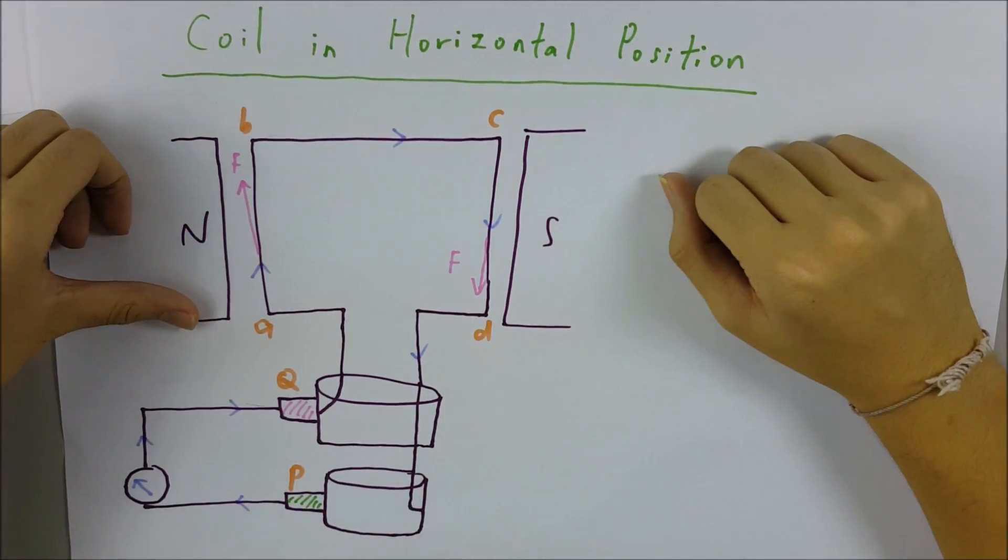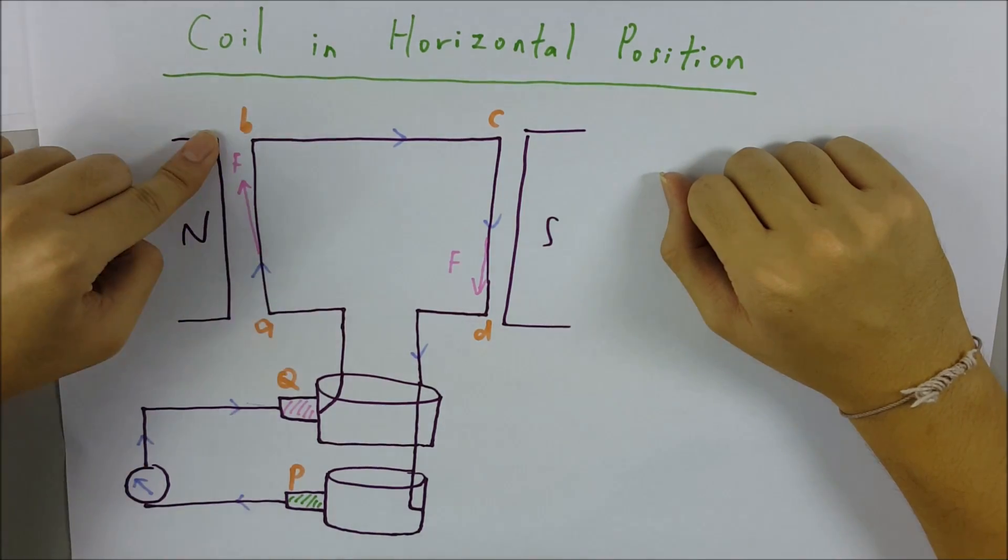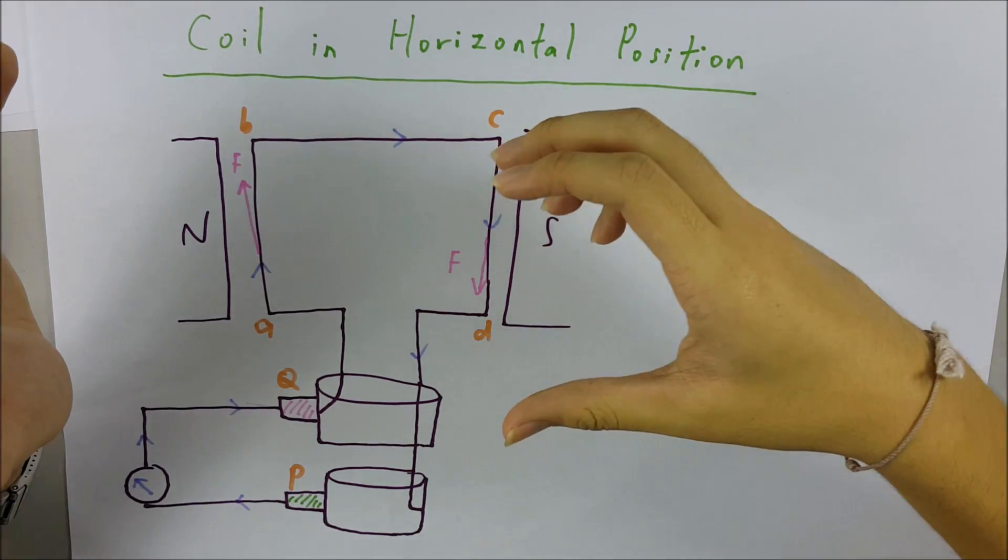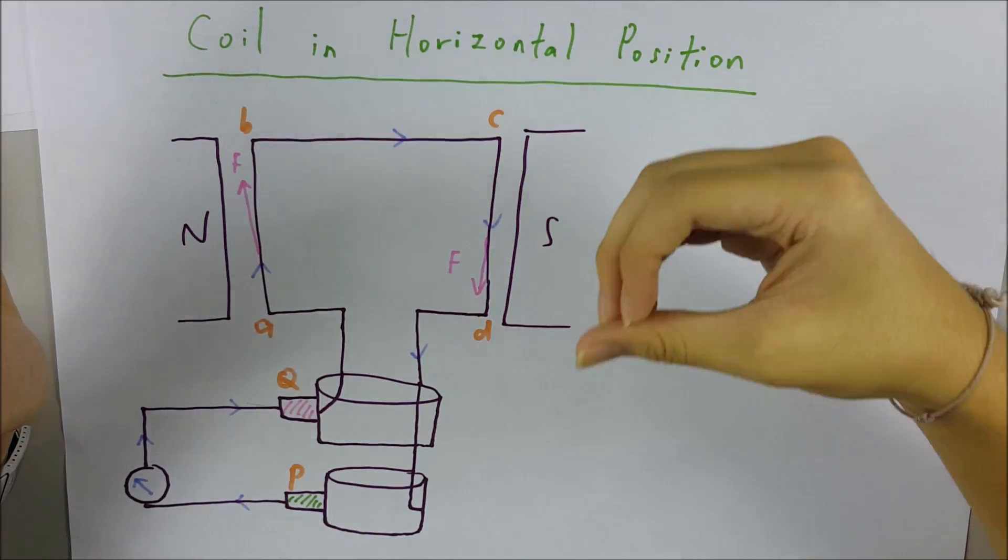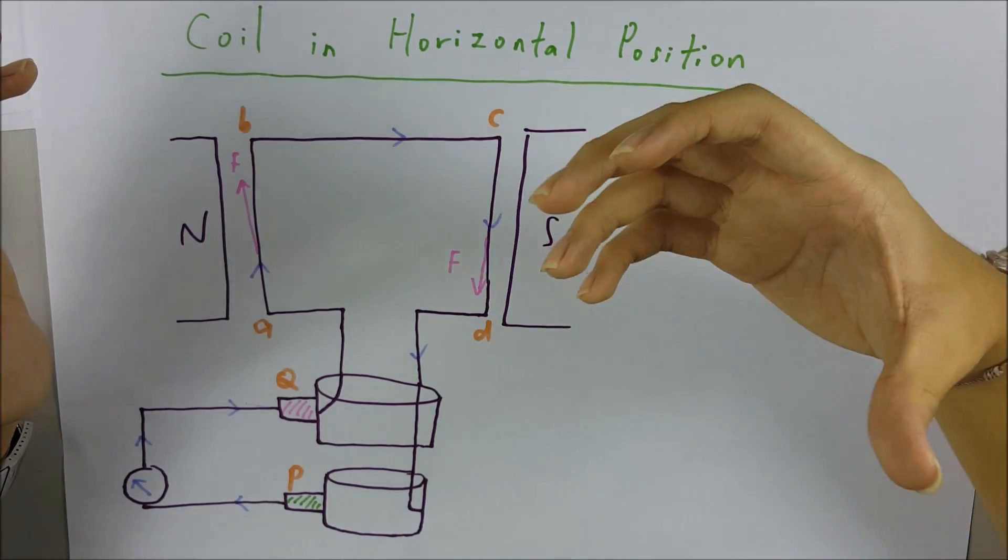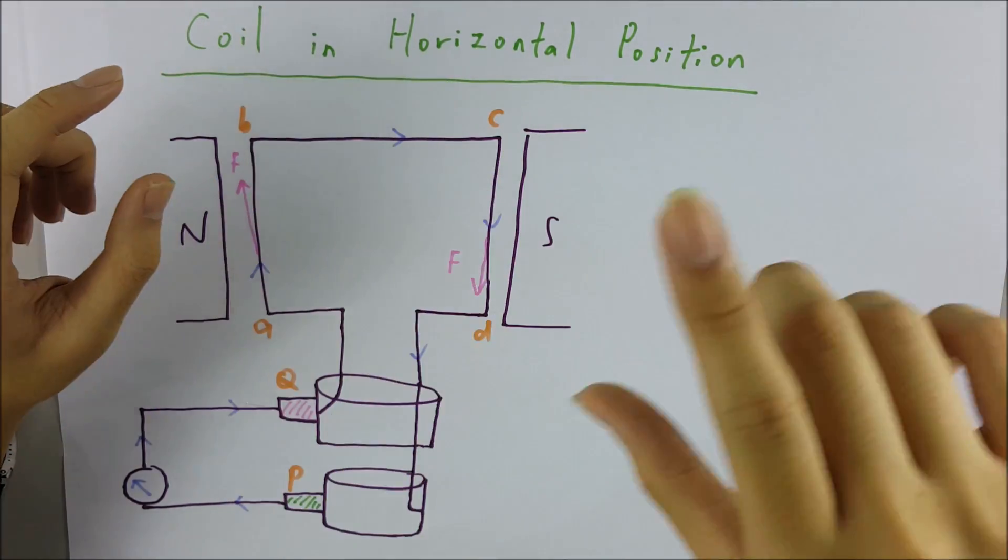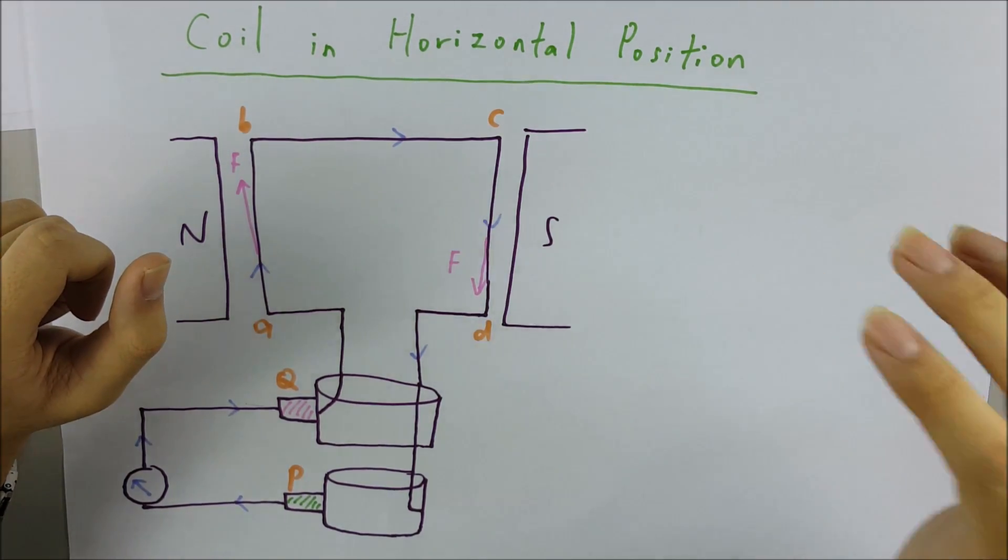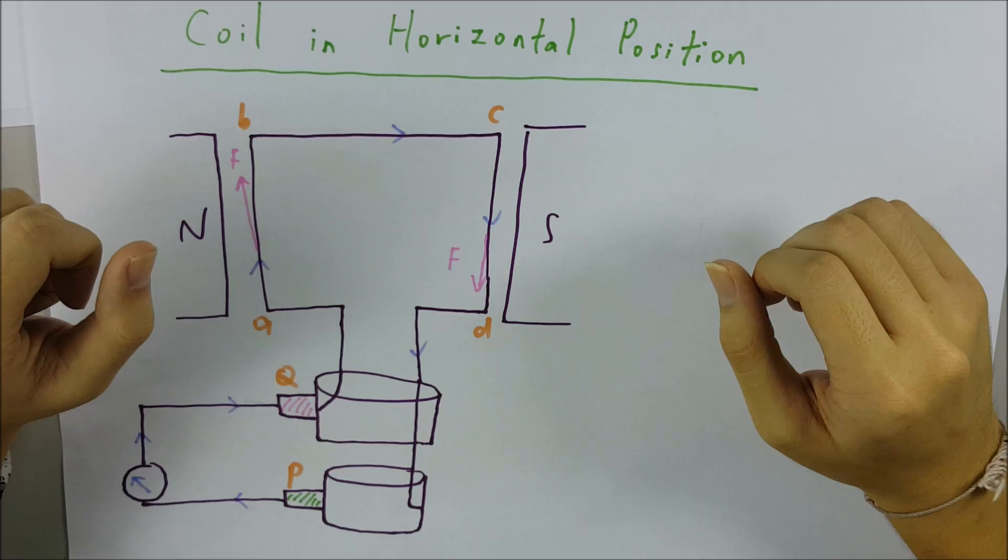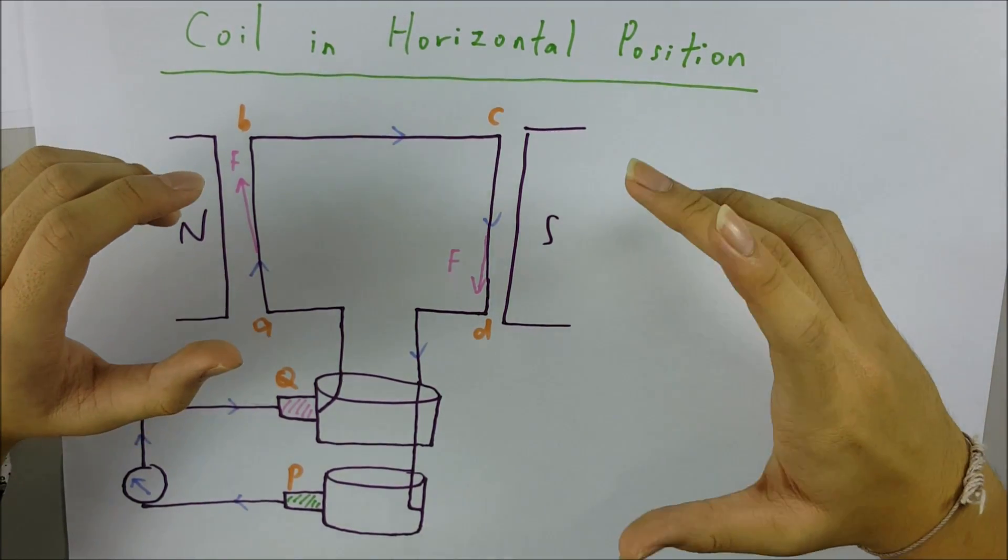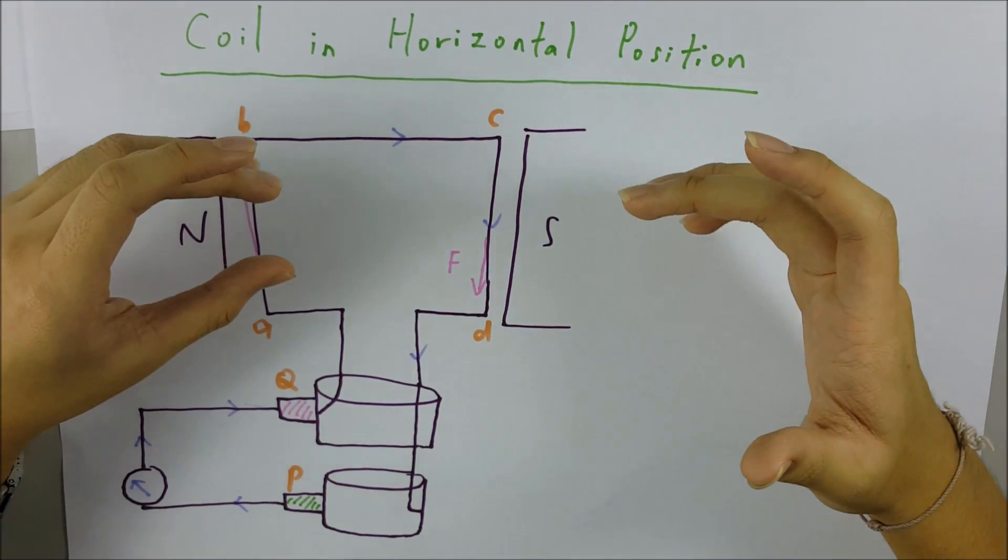Okay, so now the side AB moves upwards and the side CD moves downwards, so there will be a cutting across the magnetic field lines and this produces an induced current. The coil actually moves in a clockwise direction, and we apply Fleming's right-hand rule. The induced current flows from A to B and from C to D.